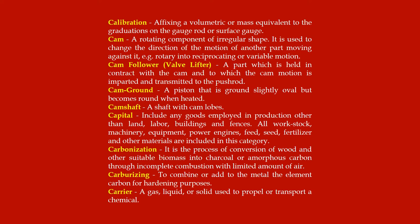Cam ground: a piston that is ground slightly oval but becomes round when heated. Camshaft: a shaft with cam lobes. Capital: includes any goods employed in production other than land, labor, buildings and fences; all work stock, machinery, equipment, power engines, feed, seed, fertilizer and other materials are included in this category.